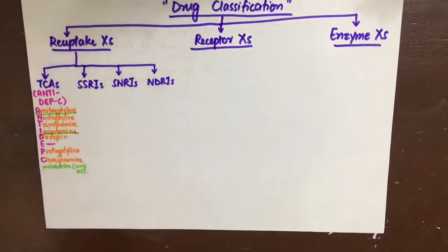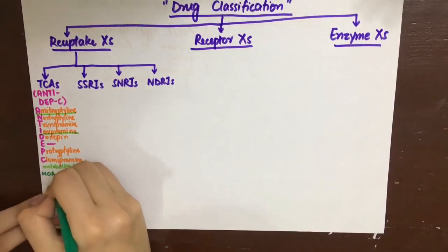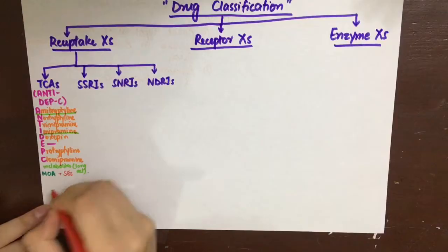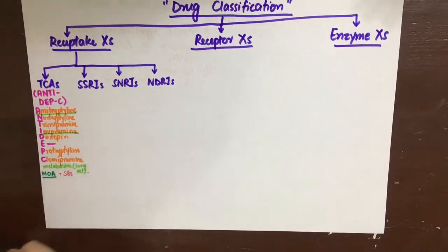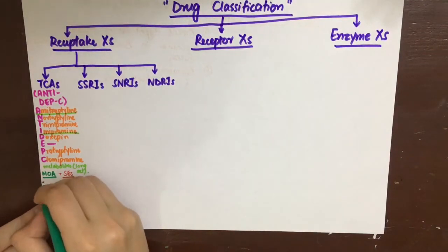Now, the mechanism of all TCAs is to decrease the reuptake transport of both serotonin and noradrenaline and thus increase their levels in the synapses. The mechanism of action and adverse effects will be described simultaneously. First, they will block norepinephrine reuptake. So, the side effect in this case can be adrenergic overstimulation.